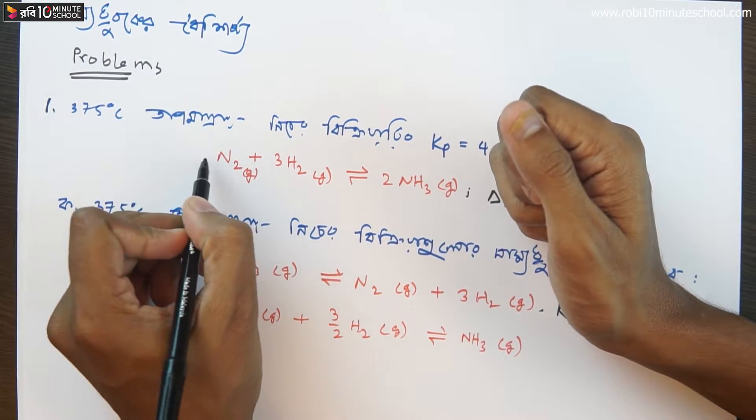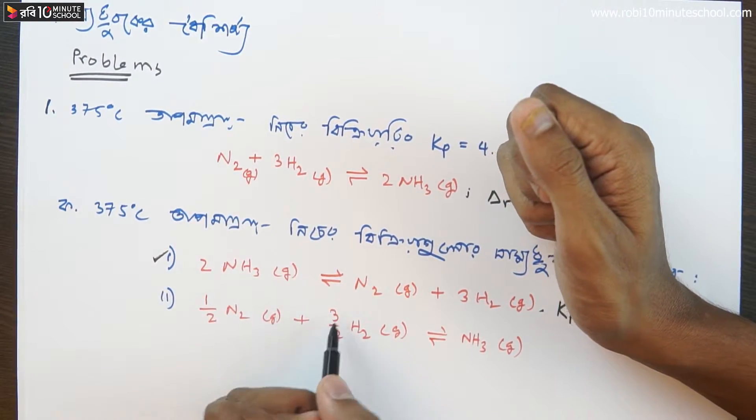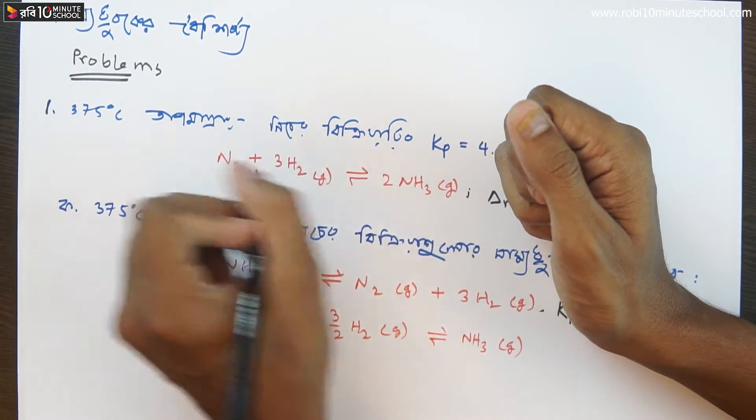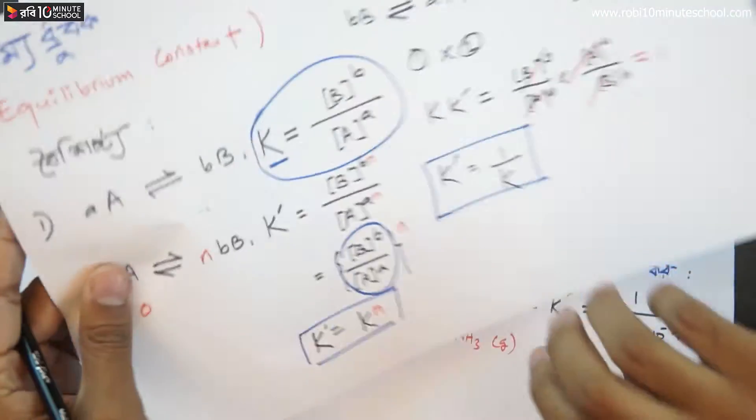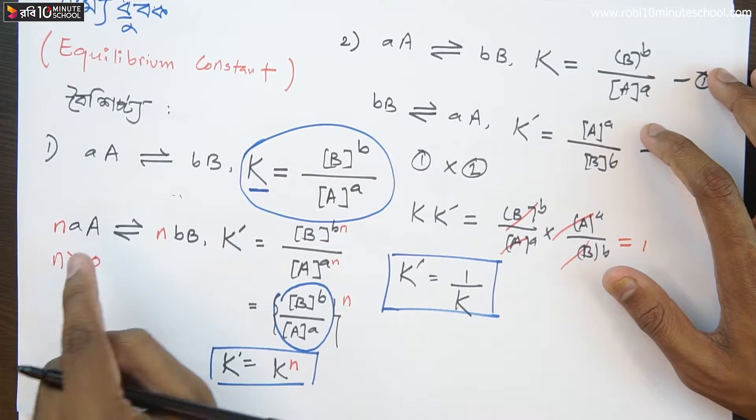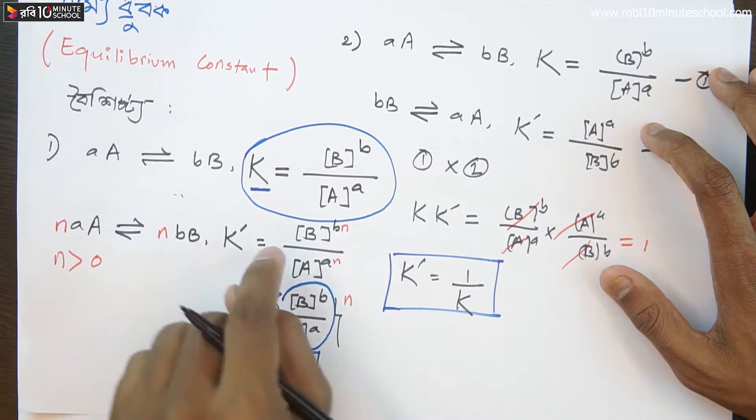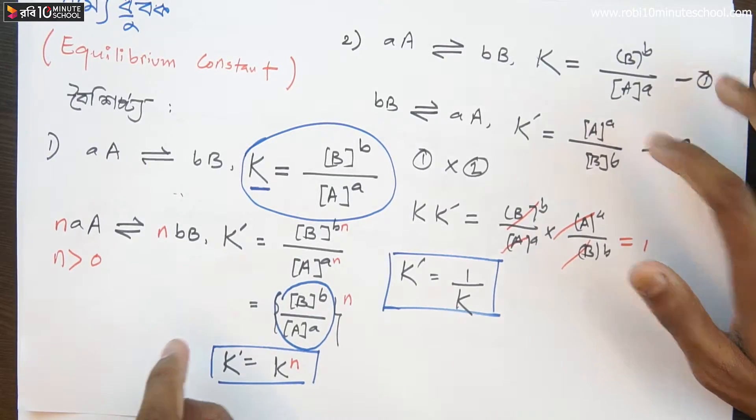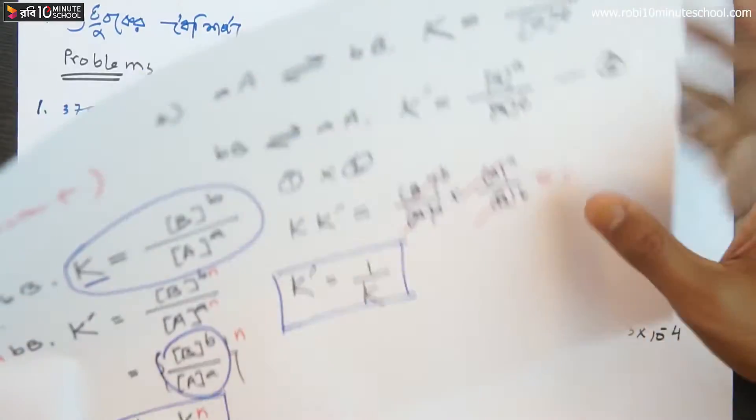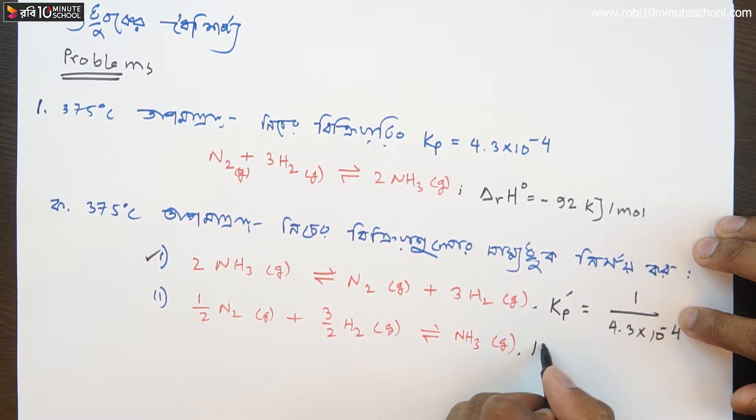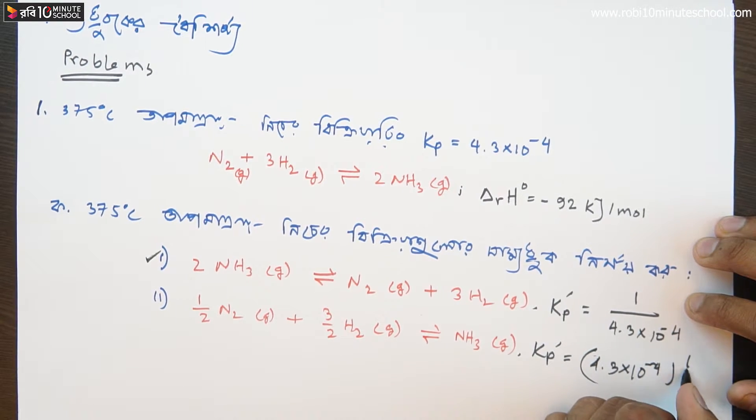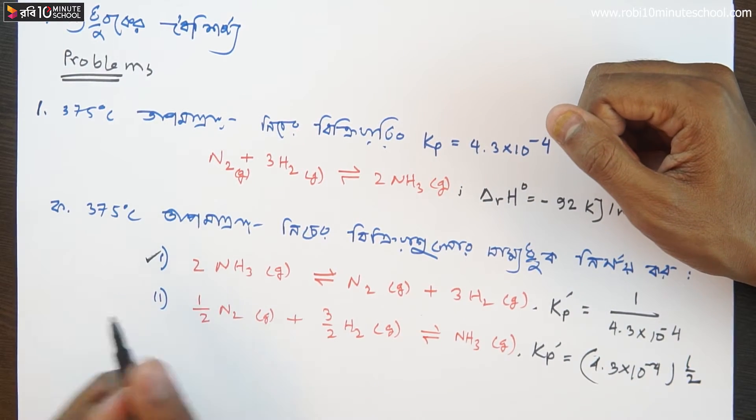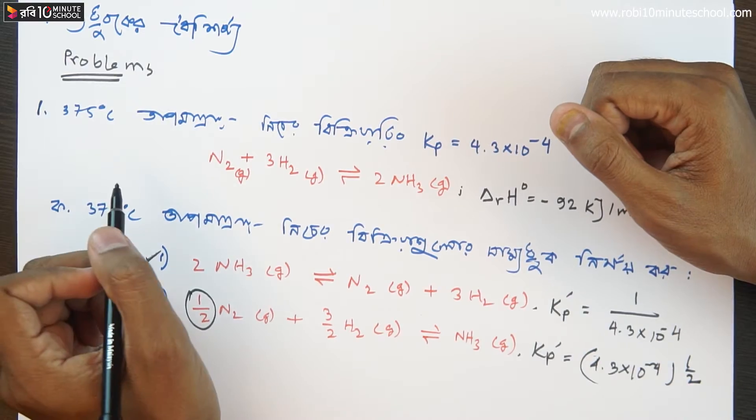We had nitrogen and 3 by 2 hydrogen. The nitrogen is divided in half. In a reverse reaction, this is the negative reaction. So the Kp prime, the new Kp, is more than the original Kp of 4.3 × 10 to the power minus 4. We have a half power, so this is the calculation.